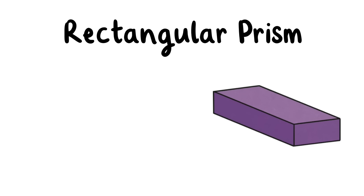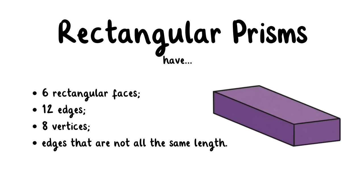This is a rectangular prism. Rectangular prisms have six rectangular faces, 12 edges, eight vertices, and edges that are not all the same length.